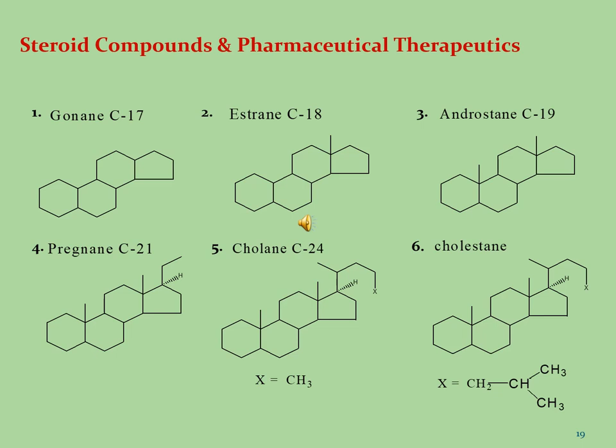Let's see some important steroidal compounds and their pharmaceutical applications. The first molecule has 17 carbon atoms and is named gonane. It has been isolated from Solanaceae and Melanthiaceae families of plants, and is used as a contraceptive vaginal ring and also has progestational activity. This molecule is soluble in organic solvents such as ethanol, acetonitrile, and methanol, which should be purged with an inert gas.